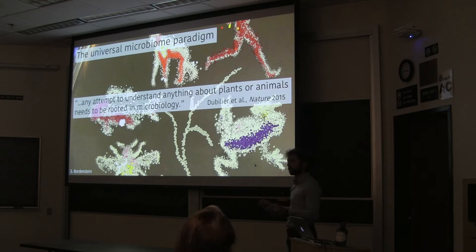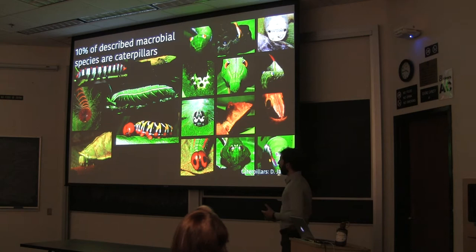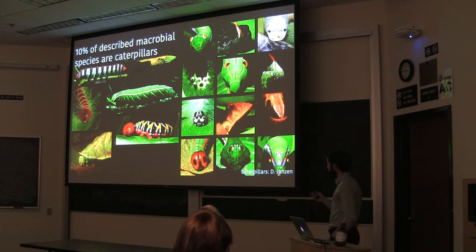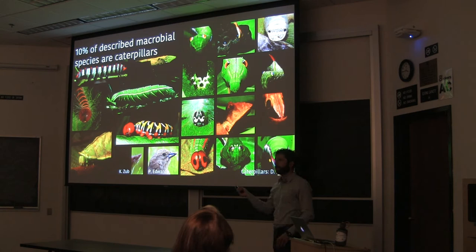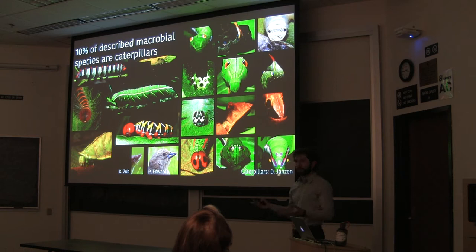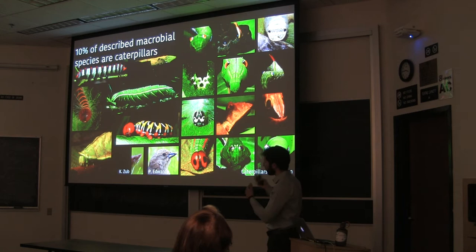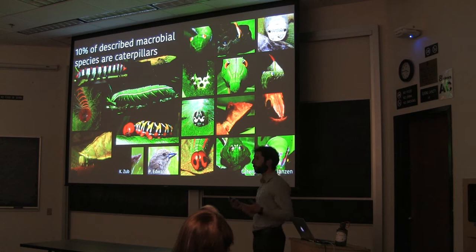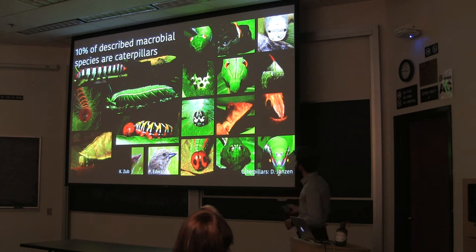For any theory to be general, at least for macros, it has to apply to the one out of every ten species that's a caterpillar. On this slide there are 18 different caterpillar species shown, and proportionally, as far as described species go, there is one bird and half a mammal. There are 180,000 described caterpillar species, estimated to be about three times that many. Understanding how microbes play a role in caterpillars is important for understanding the evolution of herbivory in general and for testing that universal microbiome paradigm.